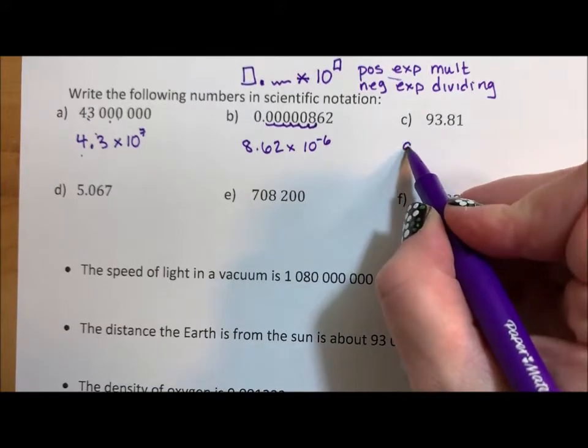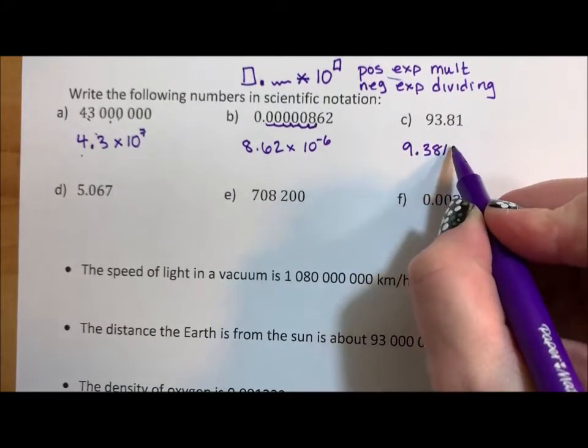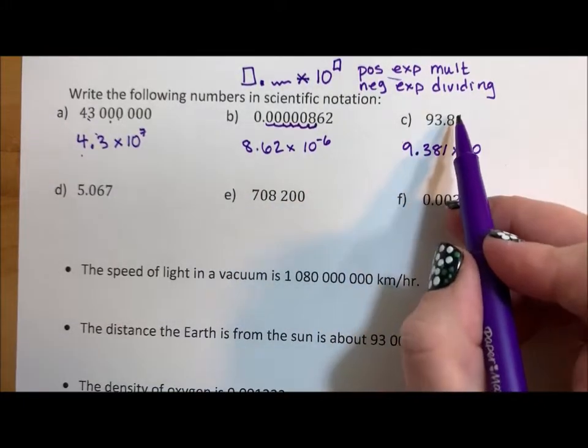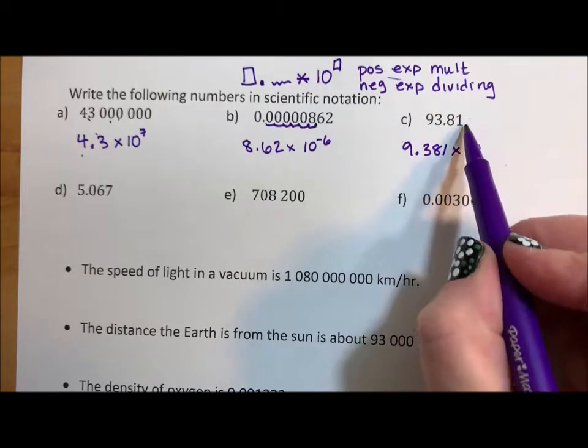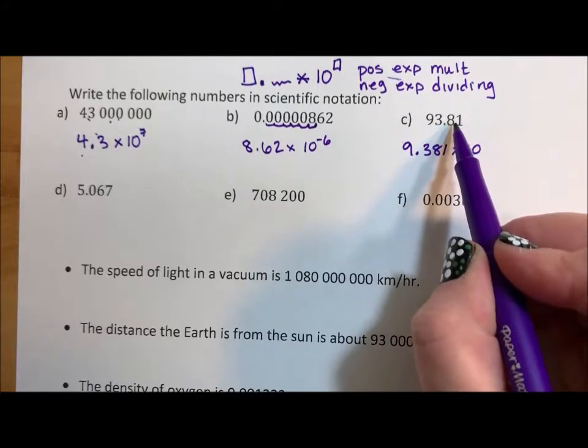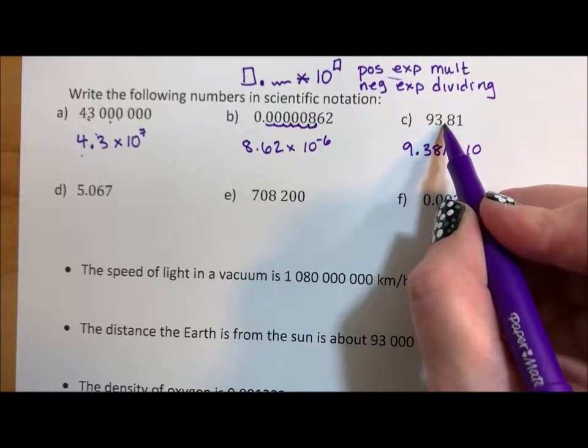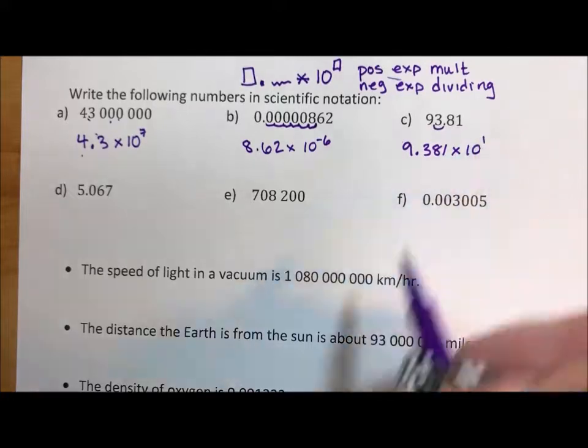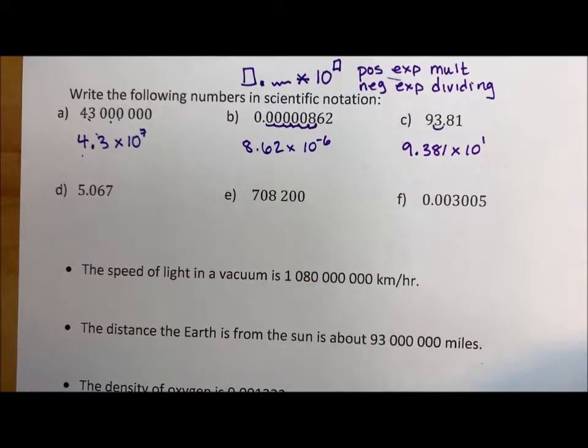Now this one's tricky. 9.381 times 10. To get this back to here, the decimal point isn't returning to the right side of the 1, it's returning to between the 3 and the 8, which means I only need to move the decimal point one time to get it back to the original number. Don't always think that the decimal point has to go all the way back to the farthest right-hand point. Look at where it started from.